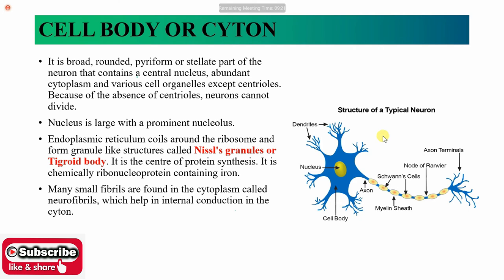If we talk about the cell body, our neuronal cell has a broad, rounded, piriform shape with a satellite part. Satellite cells are present around the cell body. That contains a central nucleus — the nucleus is present in the center of the cell body.